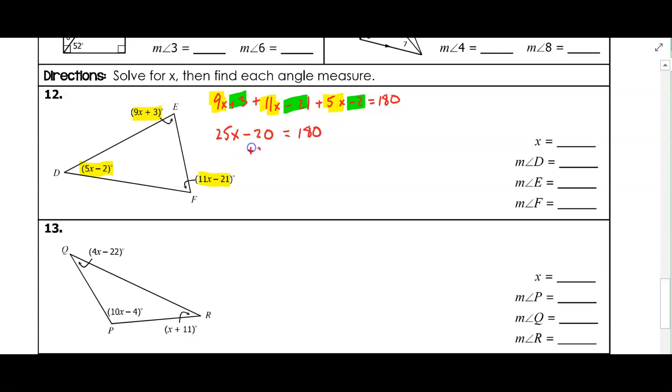And we'll add 20 to both sides. And I get 25x is equal to 200. Feel free to pause the video if I'm going too fast, or if you have questions that you want to ask or write down. So x is 8.